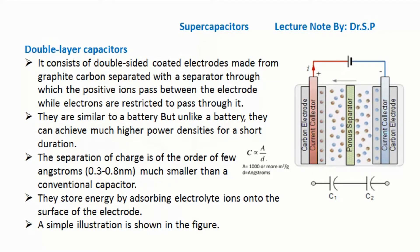Double-layer capacitors consist of double-sided coated electrodes made from graphite carbon, separated with a separator through which positive ions pass between the electrodes while electrons are restricted from passing through it. They are similar to a battery, but unlike a battery, they can achieve much higher power densities for a short duration.